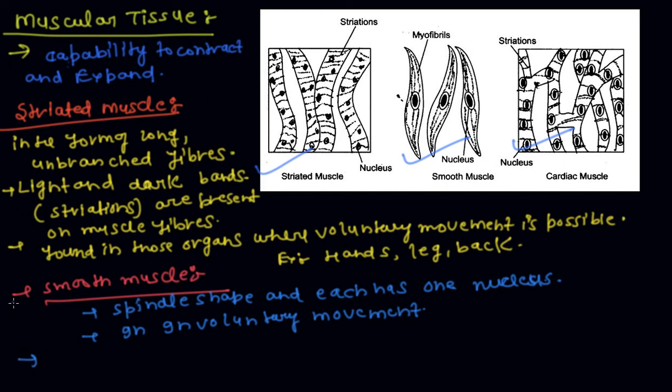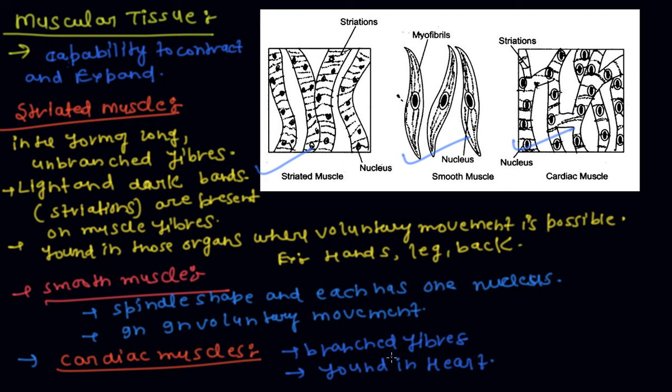Cardiac muscles are in the form of branched fibers. Striations are present and cells are uninucleate. These are found in the heart. Cardiac muscles are capable of continuous contraction and relaxation throughout life.